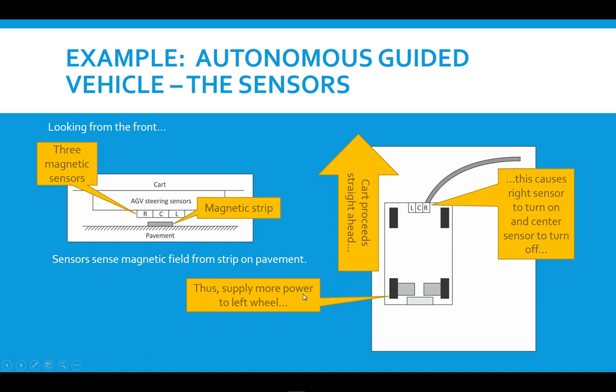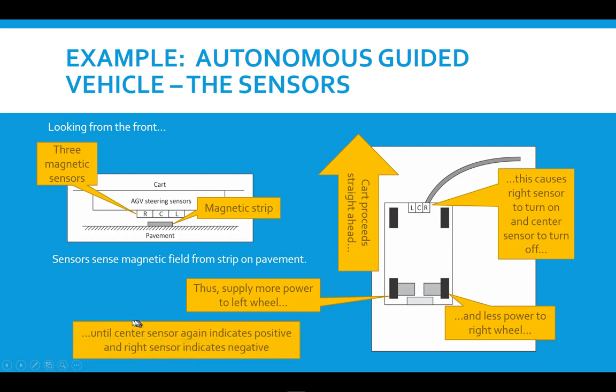So what we need to do is supply more power, that could be voltage or current, to the left wheel to make it turn faster, and less to the right wheel to make it turn slower. And that proceeds until the center sensor—so the cart will start to turn right, and the center sensor will again move over the magnetic strip, and then the cart will proceed straight ahead. The same thing will happen again, and it'll make another little turn to the right, and that will proceed until the cart does make a 90 degree turn to the right, and then can continue on following the magnetic strip after that.